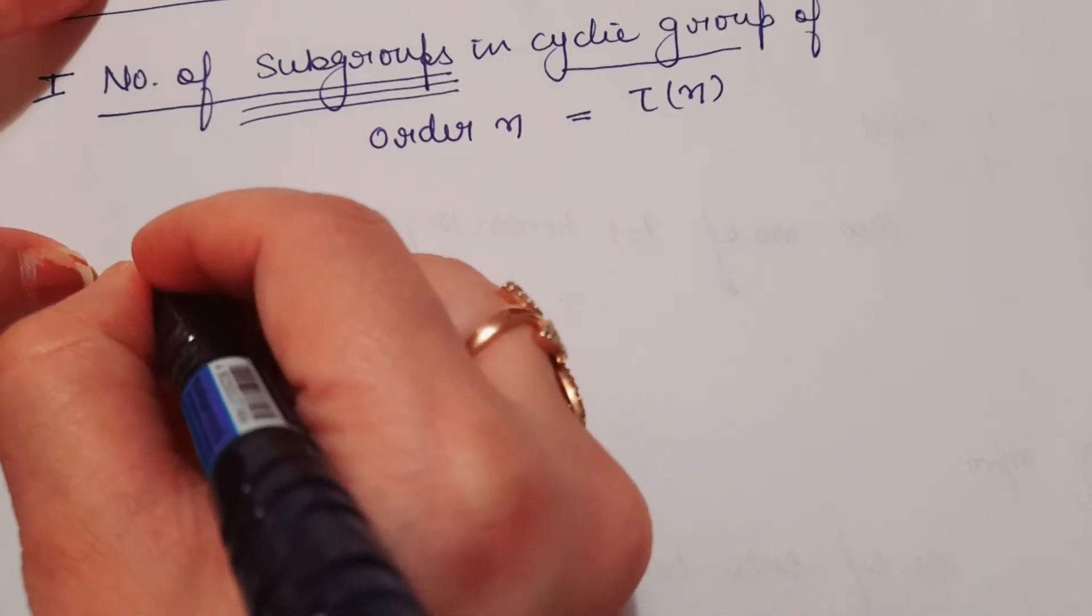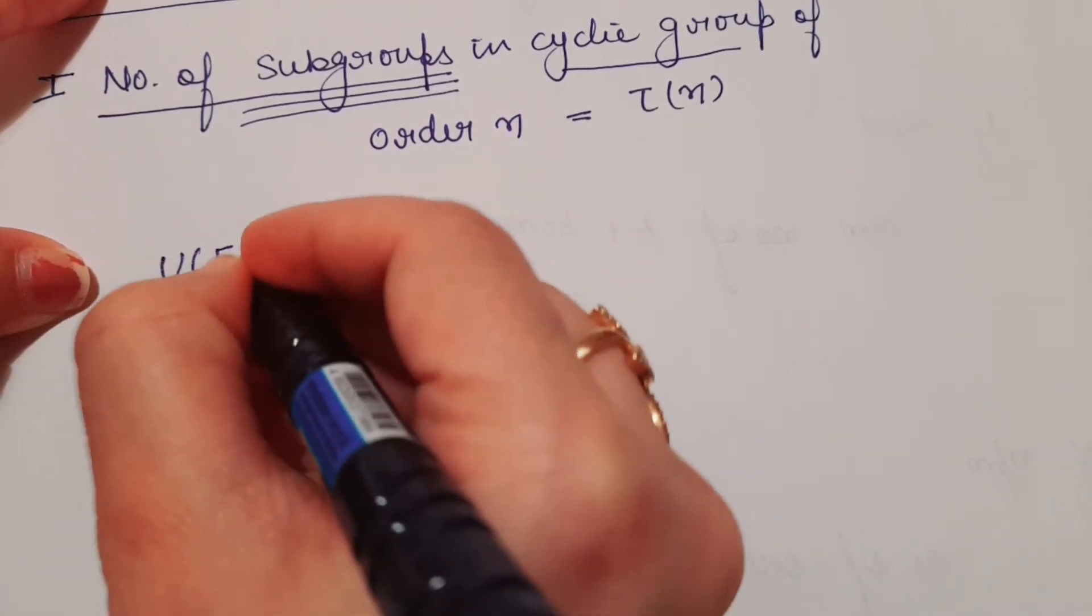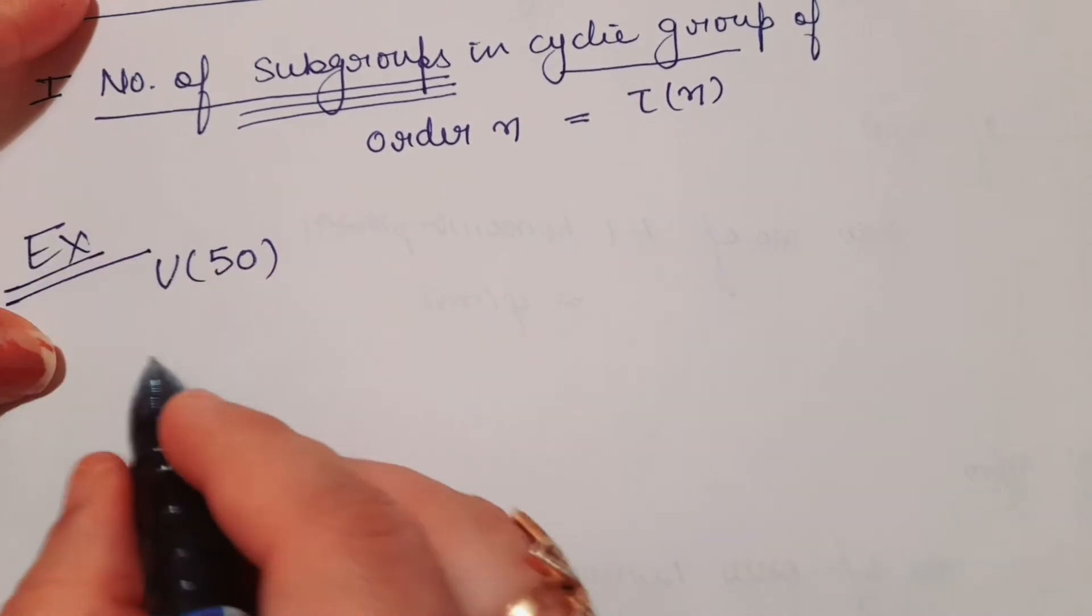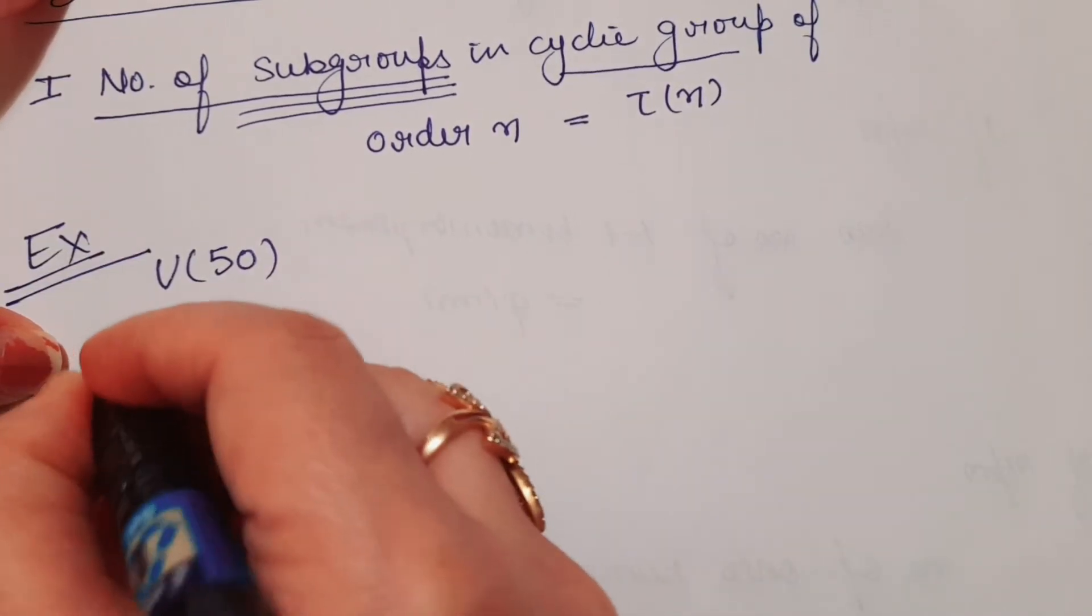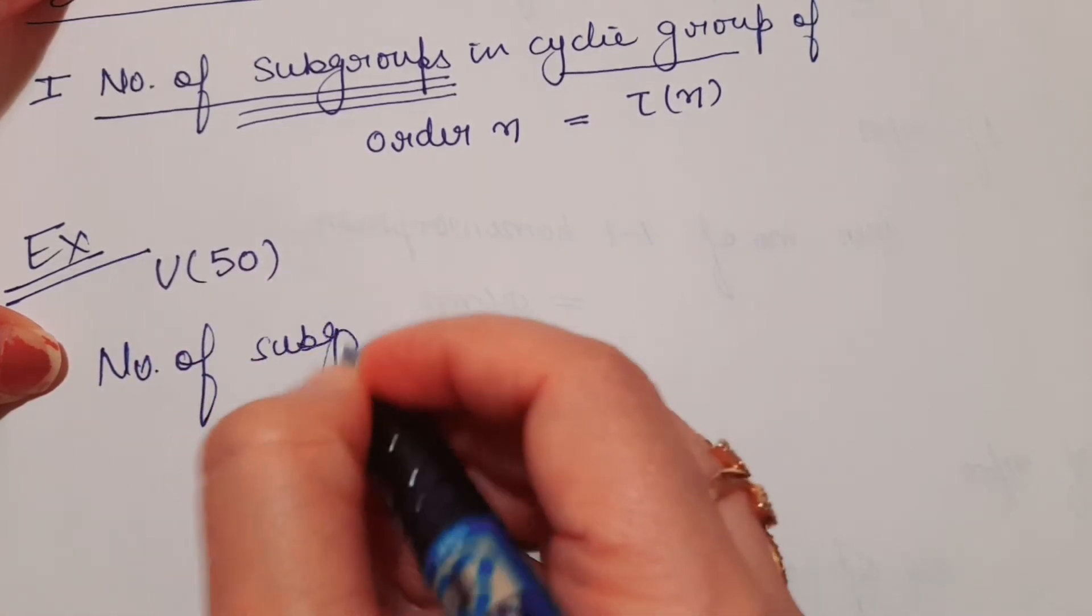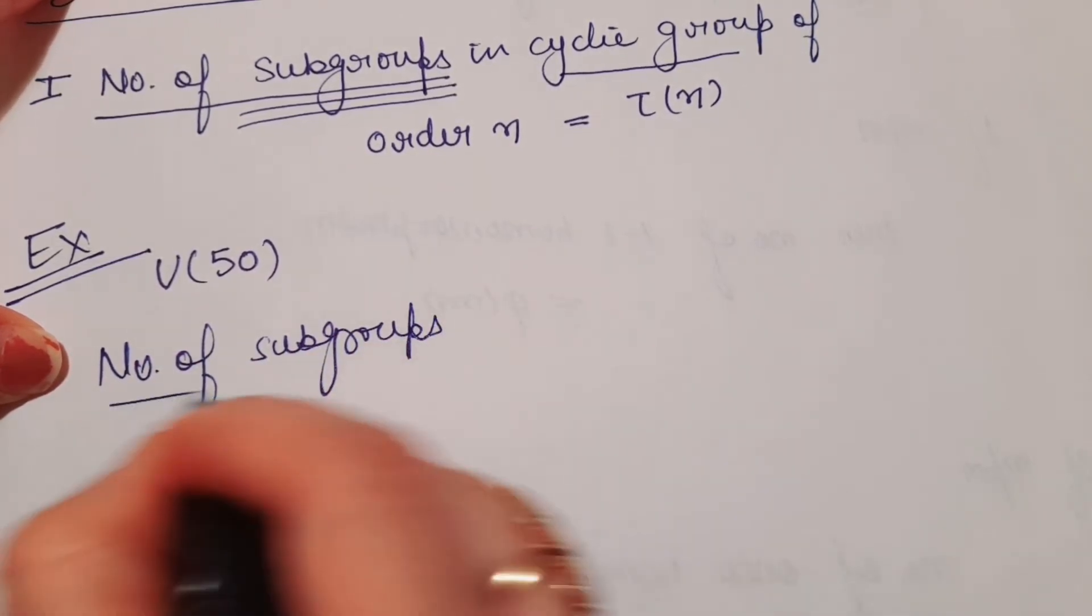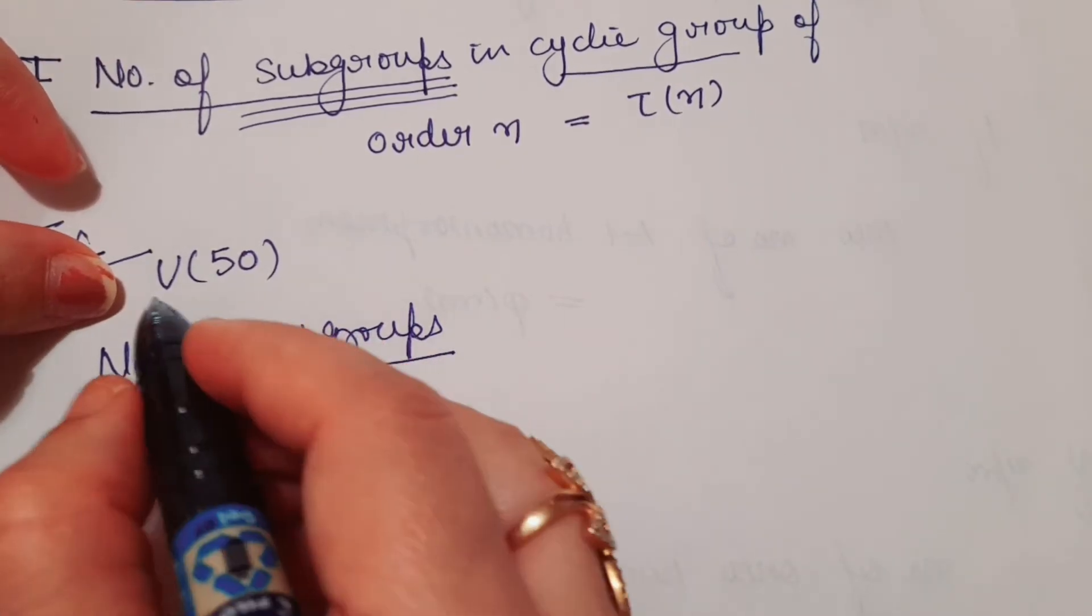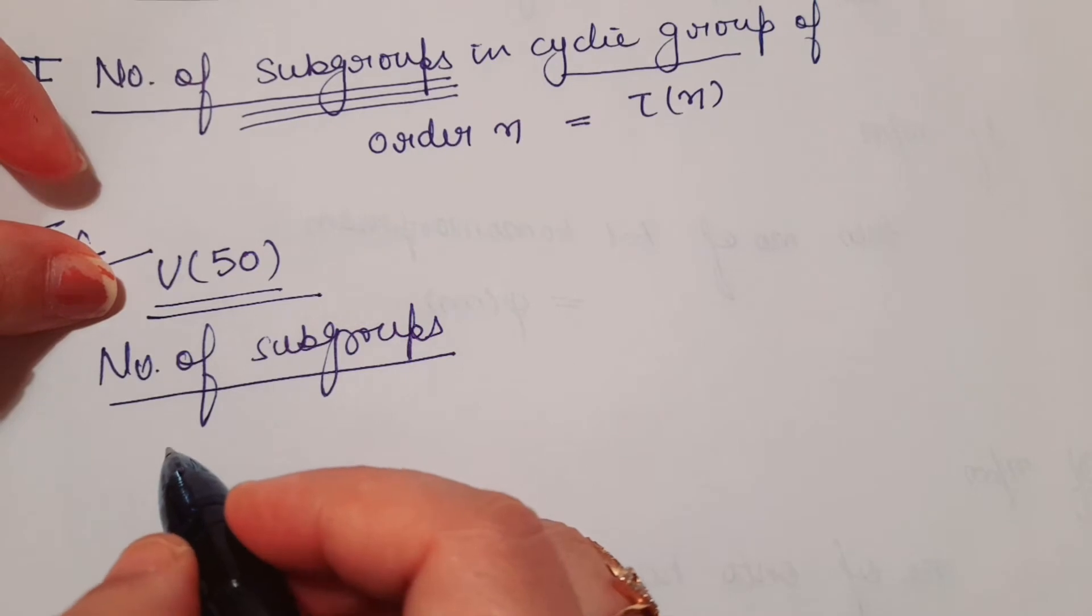Suppose you have a group U(50). For example, you have a group U(50) and you need to calculate the number of subgroups of U(50). Is U(50) cyclic? Yes, U(50) is cyclic.